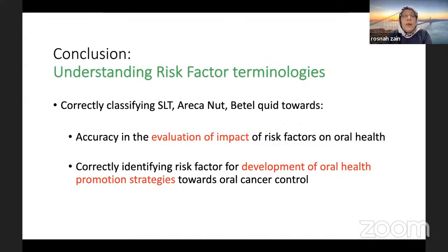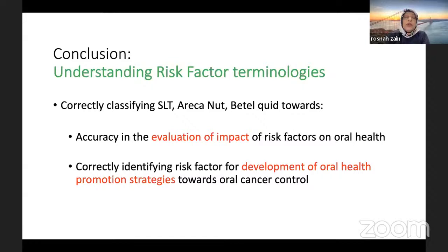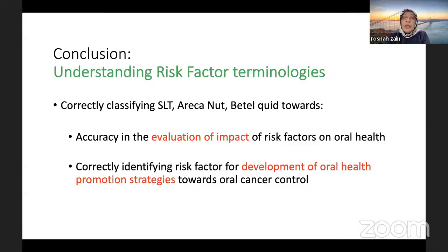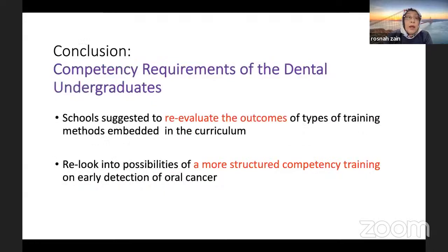In conclusion regarding risk factor terminologies: correctly classifying risk factors as smokeless tobacco, areca nut, or betel quid is important for accuracy in evaluating the impact of risk factors on oral health, and for correctly identifying risk factors for development of oral health promotion strategies — all towards oral cancer control.